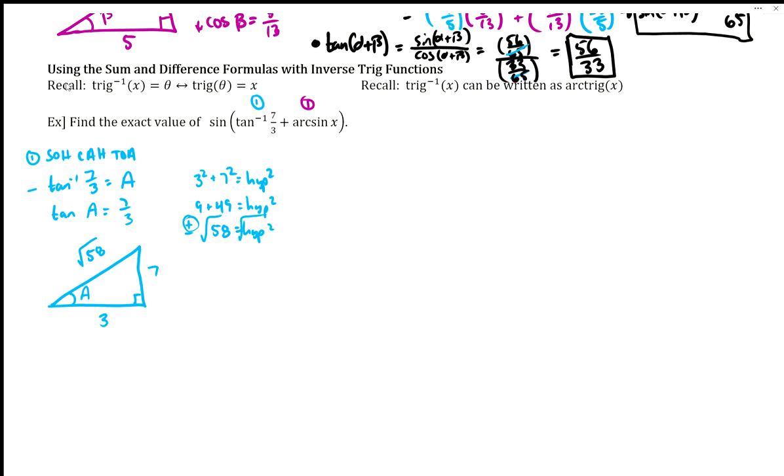This means we are in quadrant one based on inverse trig, because remember if tangent inverse has a positive here in the parentheses it's quadrant one. If it was negative then we would have been in quadrant four. So we know we're in quadrant one based on the properties of inverse trig.